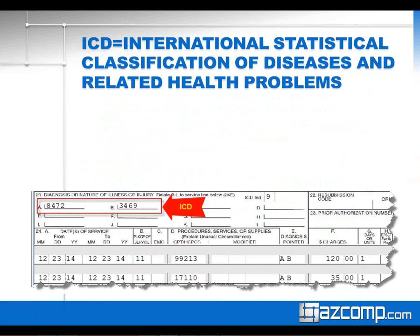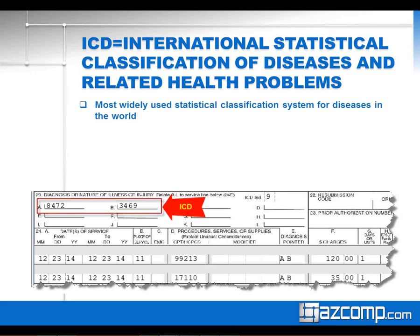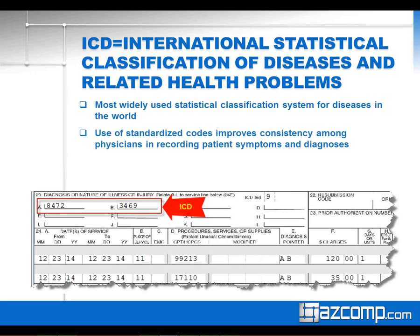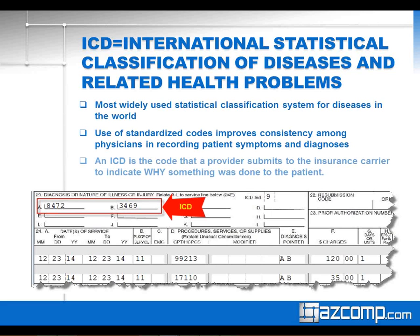ICD, on the other hand, stands for International Statistical Classification of Diseases and Related Health Problems. It is the most widely used statistical classification system for diseases in the world. The use of standardized coding helps improve consistency among physicians in recording symptoms and diagnoses, and it is what we use on claims to indicate to insurance carriers why something was done or provided to a patient.